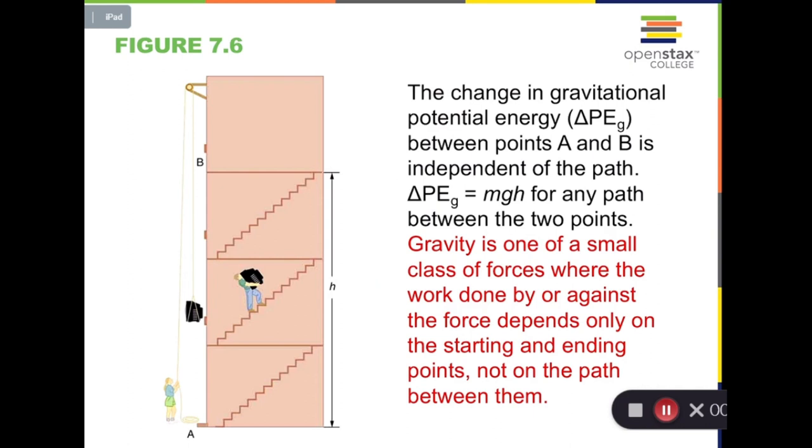When we calculate gravitational potential energy, the first question we always ask is, where is zero height? So in the formula mgh, h is a relative term because it depends on where is your zero height. And actually, any height can be zero height.